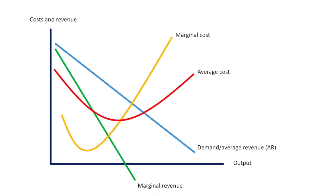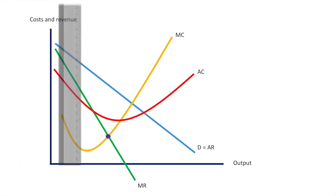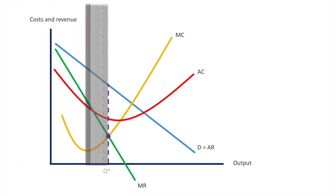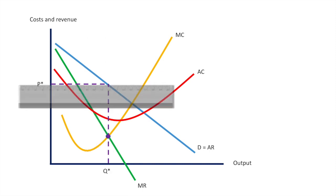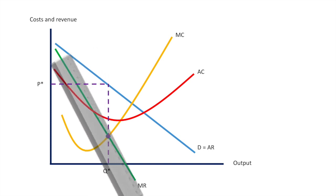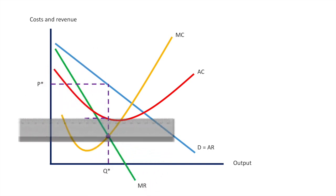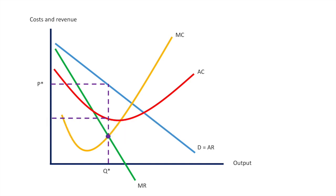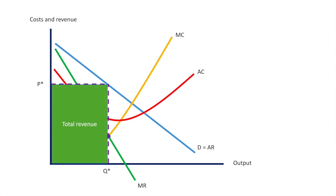To find the profit-maximizing level of output, we need to find where marginal cost equals marginal revenue and drop down to the x-axis for the profit-maximizing quantity, which is Q*. Next we draw up to the demand curve to establish the price charged by the firm and take that across to the y-axis to label P*. Next, we find where that vertical dotted line crosses the average cost curve and draw across to establish our average cost per unit. The area for the total revenue for the firm is represented by the square shaded green.